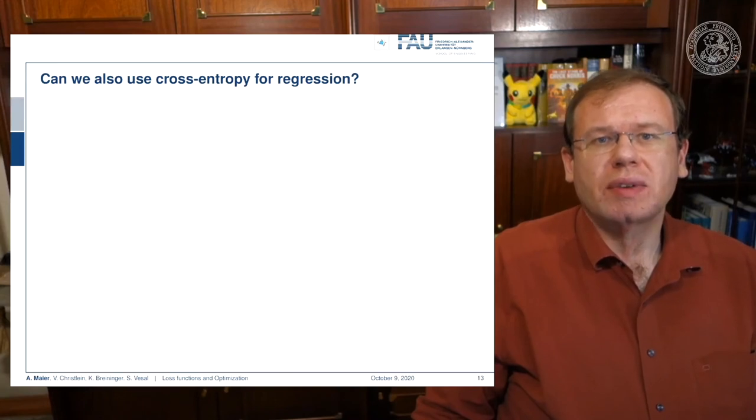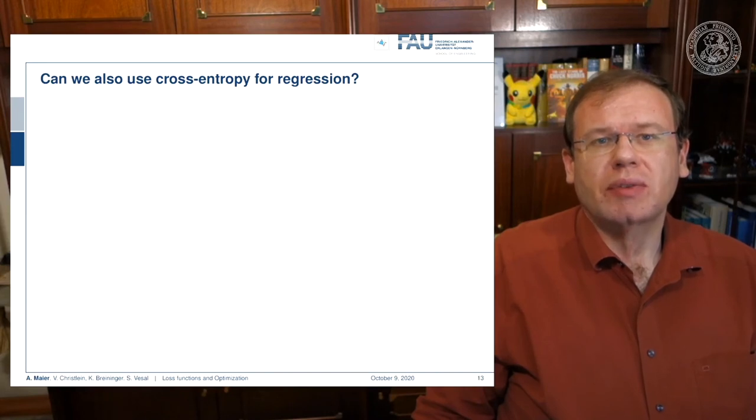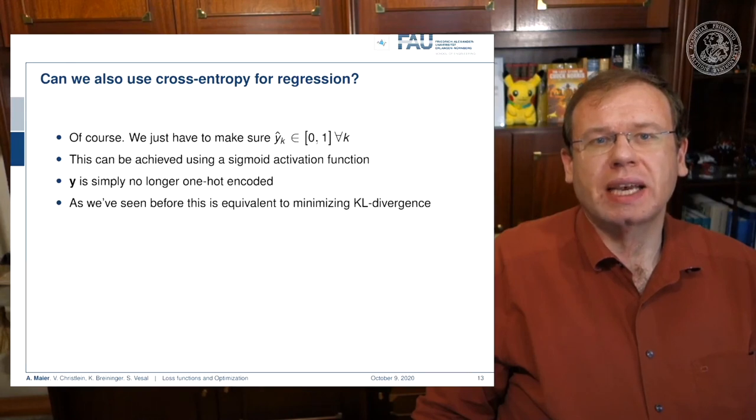Can we use cross entropy for regression? Yes, we can do that, but you have to make sure that your predictions are in the domain of 0 and 1 for all of your classes. You can do this with a sigmoid activation function. You have to be careful because in regression typically you are no longer one-hot encoded, so this is something you have to deal with appropriately. As seen before, this loss is equivalent to minimizing the KL divergence.